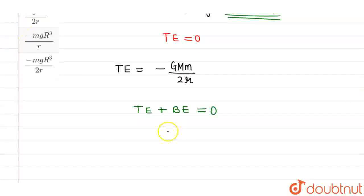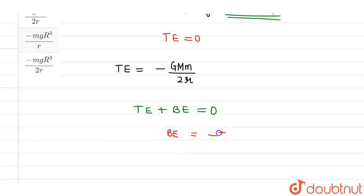So from here, the binding energy will be minus the total energy, which is GMm/2r. This is the binding energy.